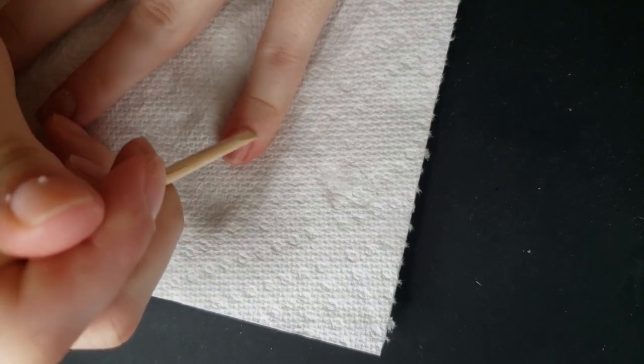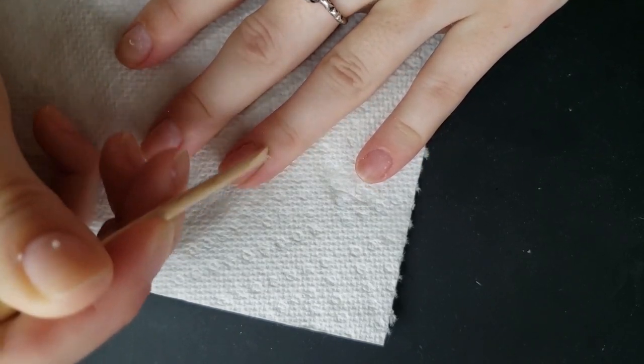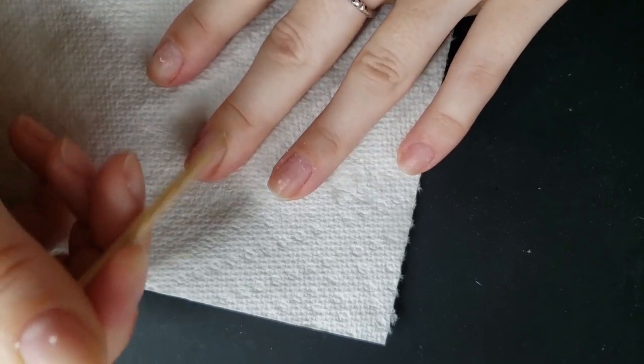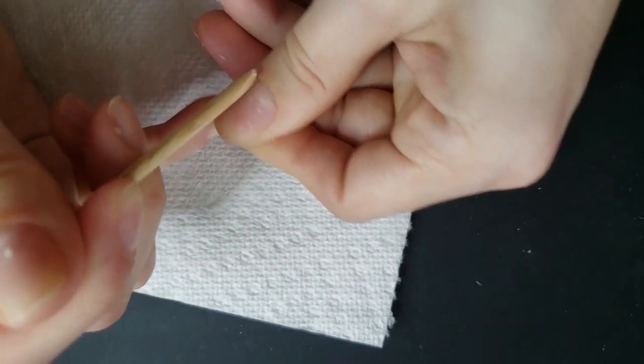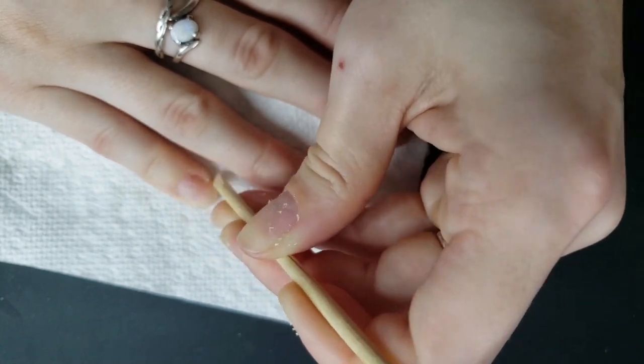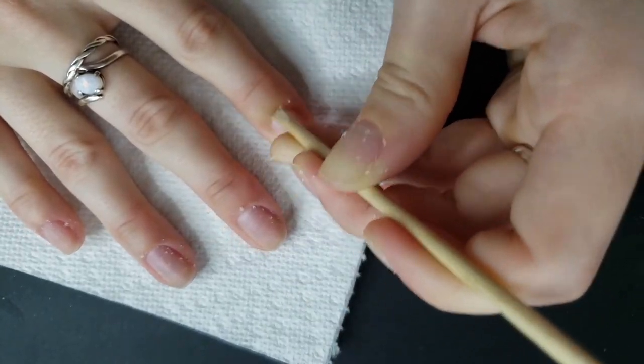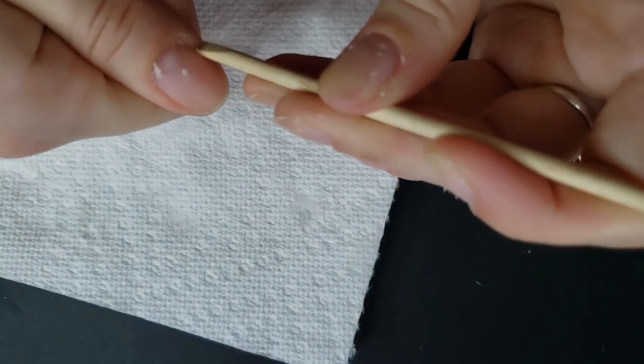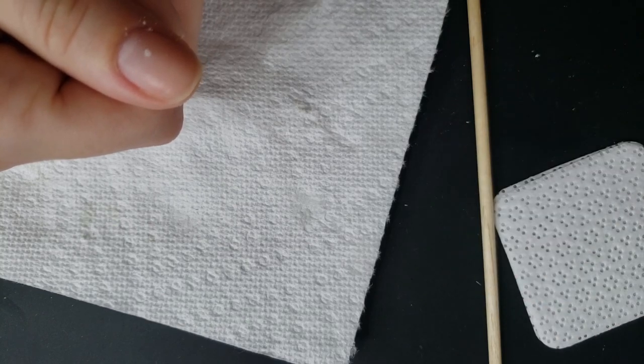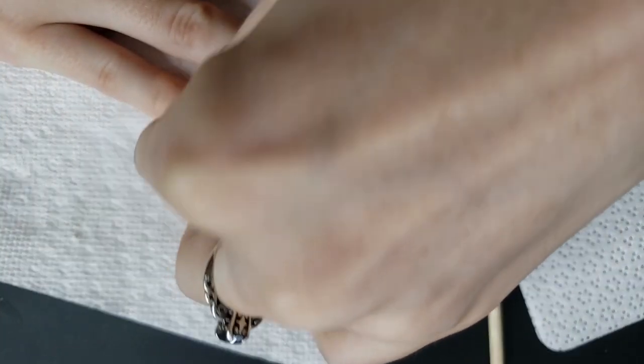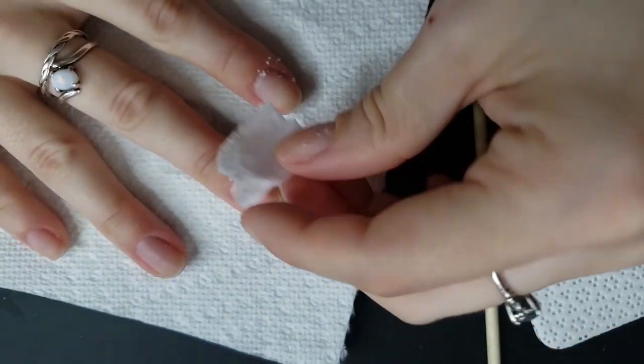I like to go in with the orange stick and just get all of the gook out. I know the metal stick has another side, but that other side is pretty sharp. And so I just go in and move that all around and make sure it's not getting stuck. And then I use another one of those lint-free wipes and some polish remover and just get all that off my nail and make sure I kind of get into that little cuticle area there.